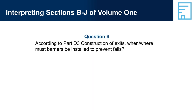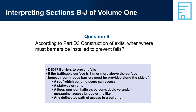Question 6: According to Part D3, construction of exits, when and where must barriers be installed to prevent falls? D3-D17, barriers to prevent falls: if the trafficable surface is one metre or more above the surface beneath, continuous barriers must be provided along the side of a roof which building users can access, a stairway or ramp, a floor, corridor, hallway, balcony, deck, veranda, mezzanine, access bridge or the like, and any delineated path of access to a building.